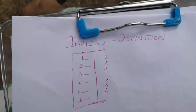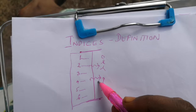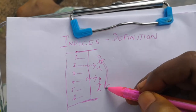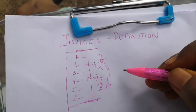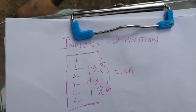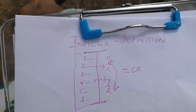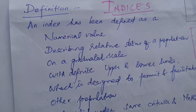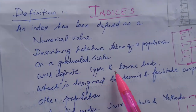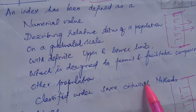With definite upper and lower limit, which is designed to permit and facilitate comparison with other population classified under same criteria and methods. You saw this picture — I will just explain you with the words again. It is a numerical value describing the relative status of the population on the graduated scale with definite upper and lower limit, which is designed to permit and facilitate the comparison with other population classified under same criteria and methods.